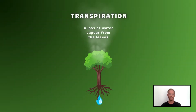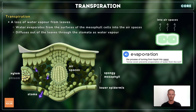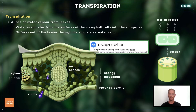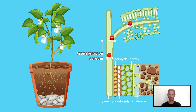Transpiration can be defined as a loss of water vapour from the leaves, and is the primary force that draws water upwards through the plant. Water evaporates from the surfaces of the spongy mesophyll cells and into the air spaces within the tissue, then diffuses out of the leaves through the stomata as water vapour. The evaporation of water from the leaves creates suction, which draws a column of water up the stem from the roots, just like drinking through a straw. Water moves up the stem in xylem vessels, and this flow of water is called the transpiration stream.